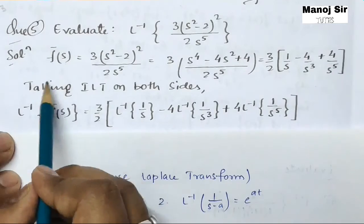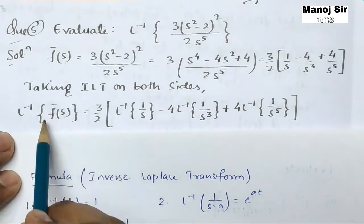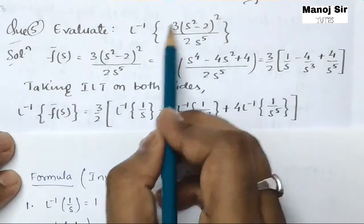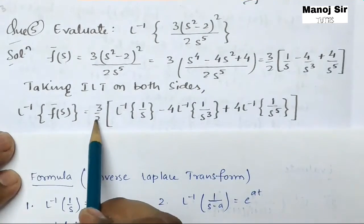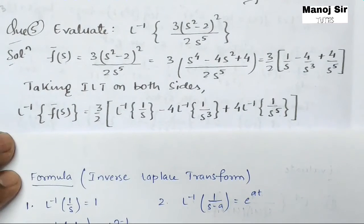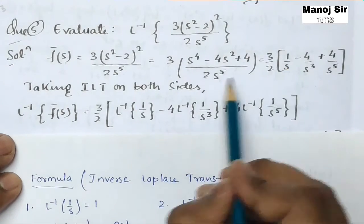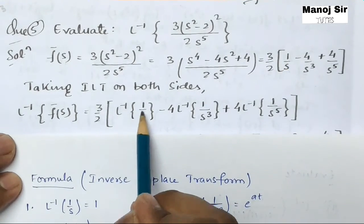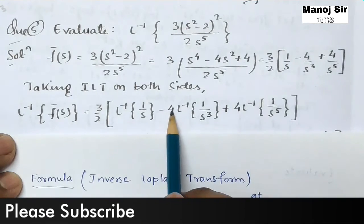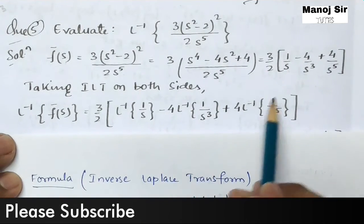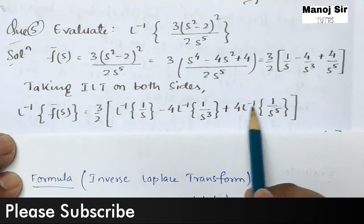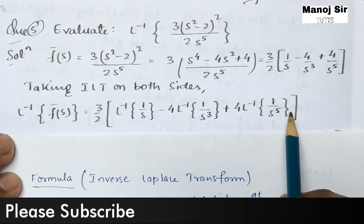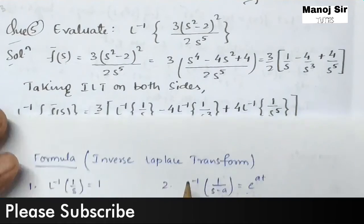Taking the inverse Laplace transform on both sides, we have L⁻¹{f̄(s)} = (3/2) times the quantity: L⁻¹{1/s} minus 4·L⁻¹{1/s³} plus 4·L⁻¹{1/s⁵}. We now use the formula for each of these terms.